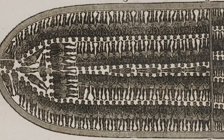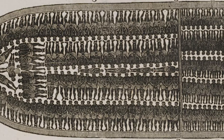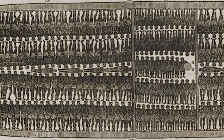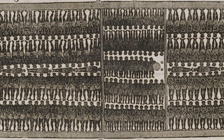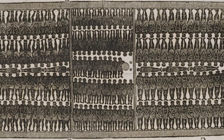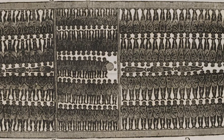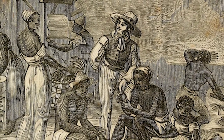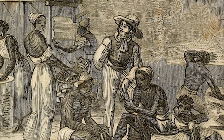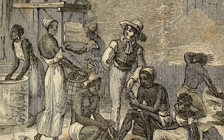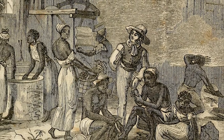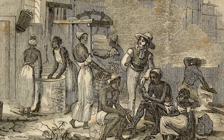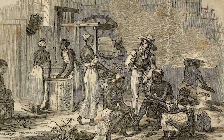While indentured servants were contracted for a specific number of years, Africans were bound in chattel slavery, which was a lifelong condition for themselves and their descendants. As cash crops became profitable and colonists expanded the size of their land holdings, plantation owners eventually came to view African slaves as a more profitable and renewable source of labor.